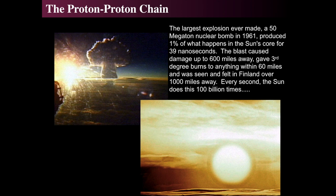For comparison, the largest nuclear explosion in human history was the Soviet Tsar Bomba in 1961 — originally designed for 100 megatons but reduced to 50. That blast equals about 1% of what happens in the Sun's core in just 39 nanoseconds. The Sun produces the equivalent of 100 billion such blasts every second. Every second the Sun does this a hundred billion times — an enormous output of energy.